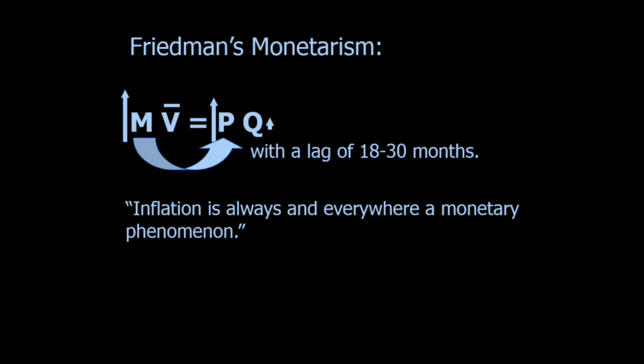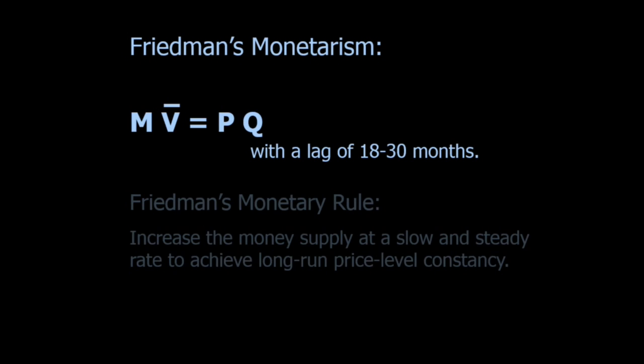That was in a 1968 book called Dollars and Deficits — probably the most quoted thing from Friedman. Friedman's monetary rule is that the money supply should be increased at a slow and steady rate to achieve long-run price-level constancy. If the long-term rate of growth is 2% to 4%, increase your money supply year in, year out at 2% to 4%, and that probably won't disturb the economy — you'll have constant prices and sustainable growth.